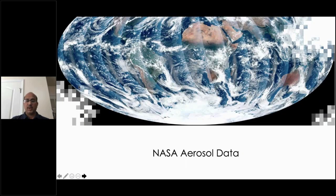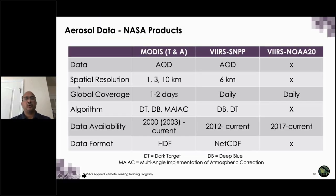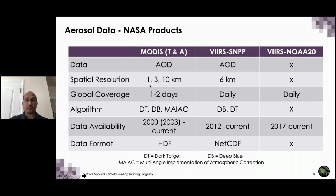Now let's look at the NASA aerosol datasets. When I say aerosols data, mostly we are talking about aerosol optical depth. For MODIS Terra and Aqua products, the spatial resolution was initially 10 kilometers when the sensor launched in early 2000. Then later a three-kilometer product was made available, and most recently a new algorithm called MAIAC retrieved data at one kilometer spatial resolution. VIIRS is a joint mission between NASA and NOAA, so there are products developed by the NASA team and products developed by the NOAA team.